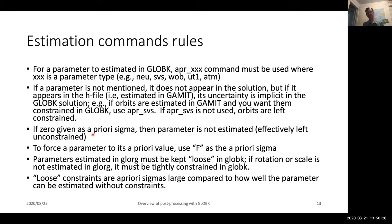Now, if you give zero as an a priori sigma in GLOBE-K, this is interpreted as not to estimate the parameter. You may have noticed that when I gave the APR_northeast_up command with zeros for the velocity, by giving it zero I'm telling it not to estimate the velocity. If you want to force a parameter to its a priori value and to have zero variance, you actually have to use F for fix, or 'force' for the a priori sigma. That is the convention that is used.